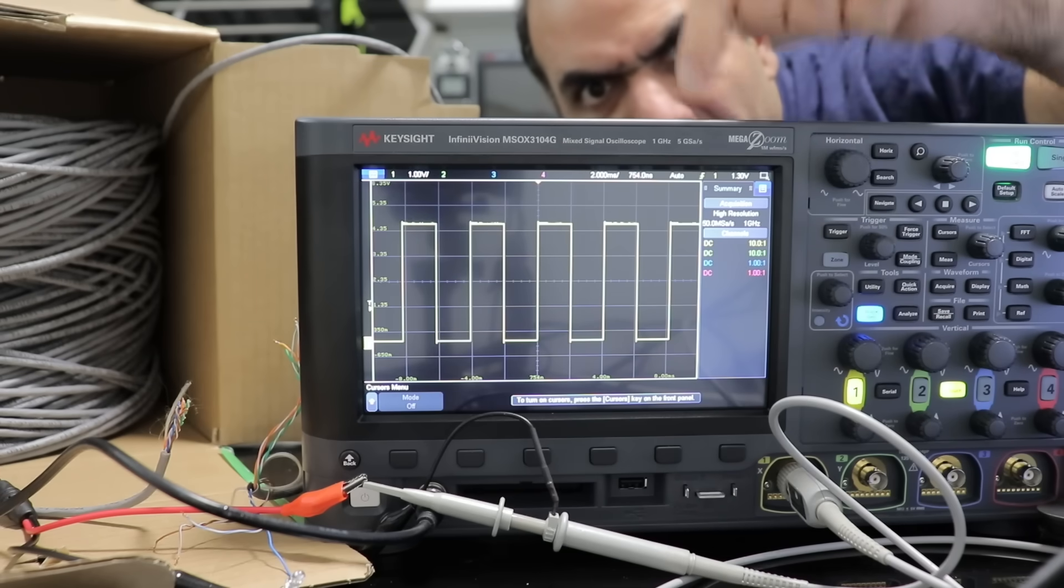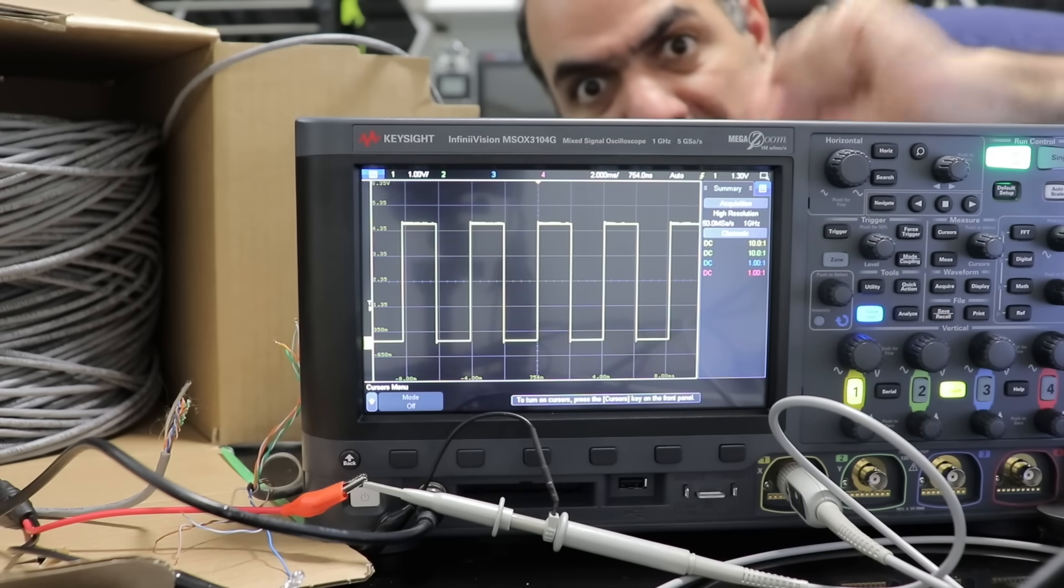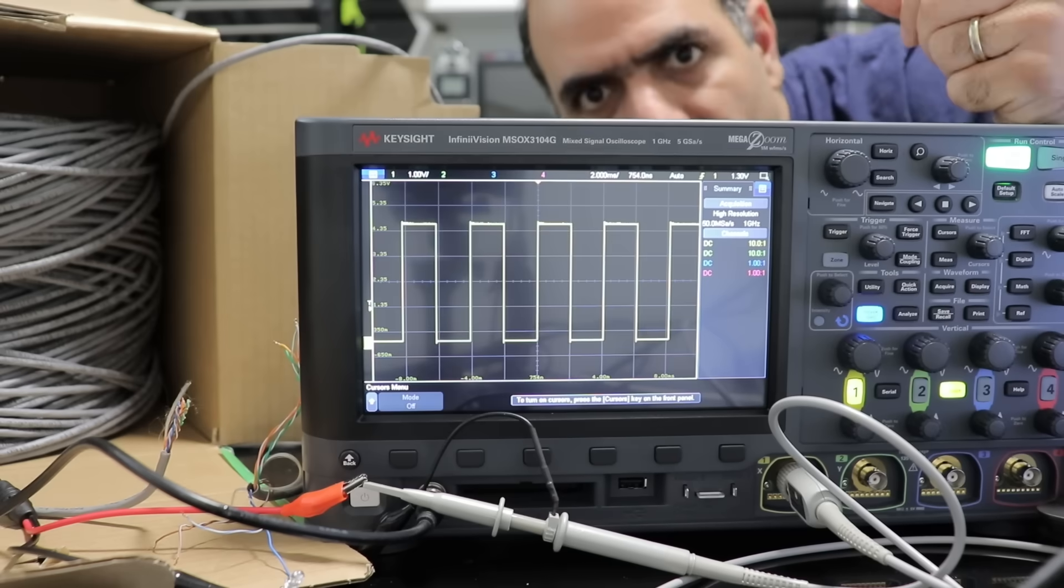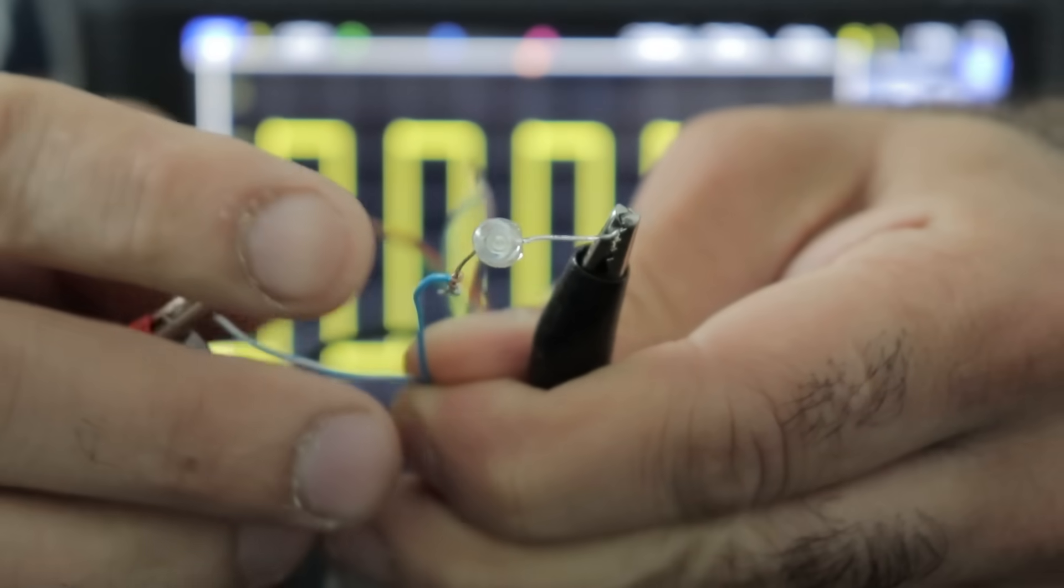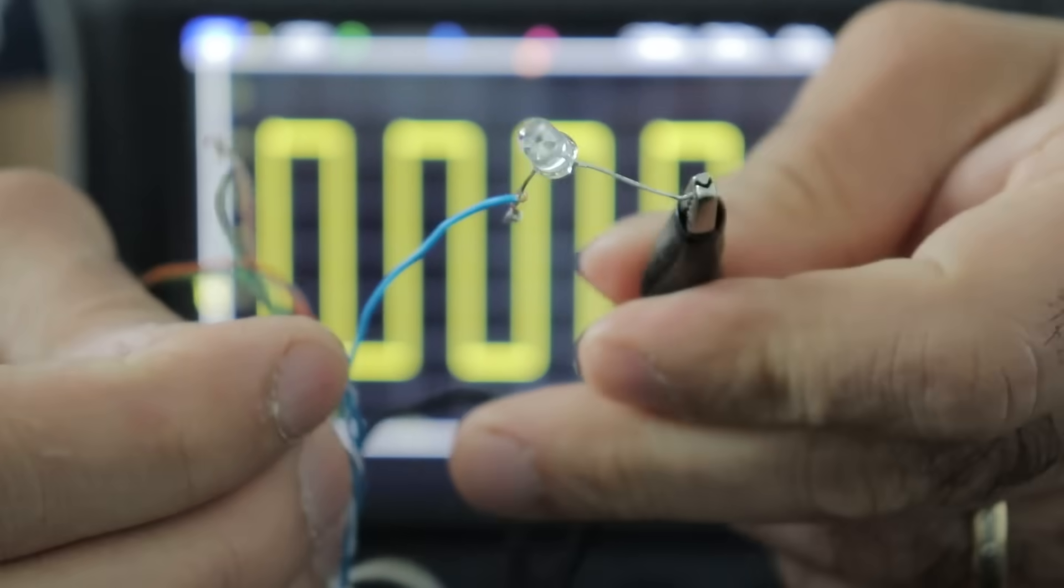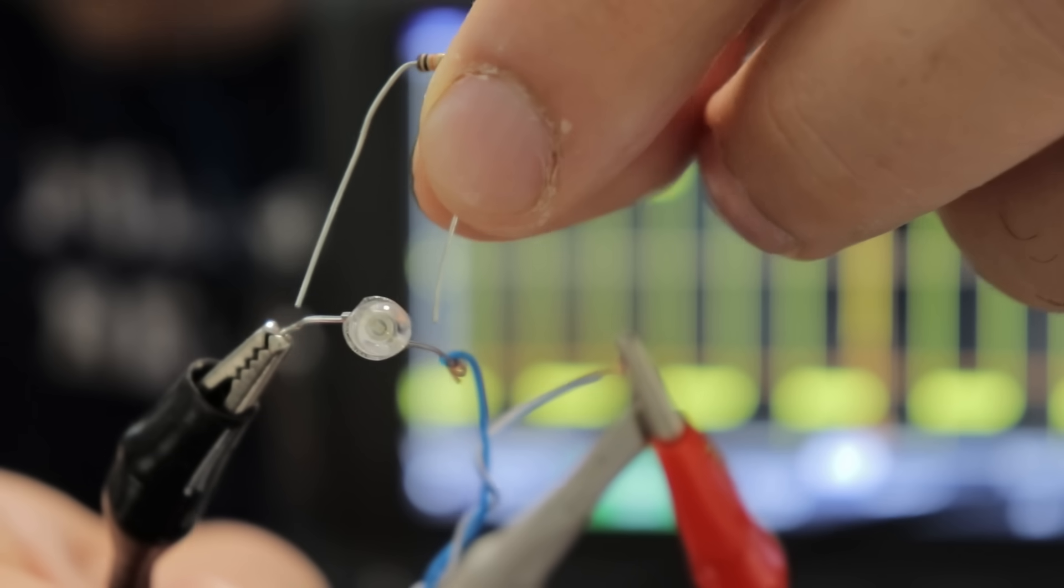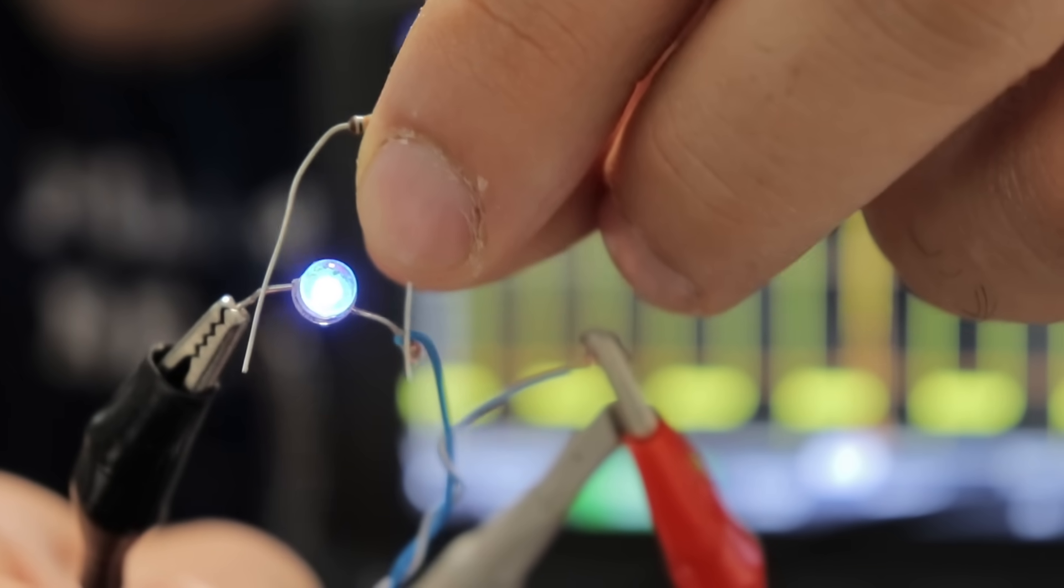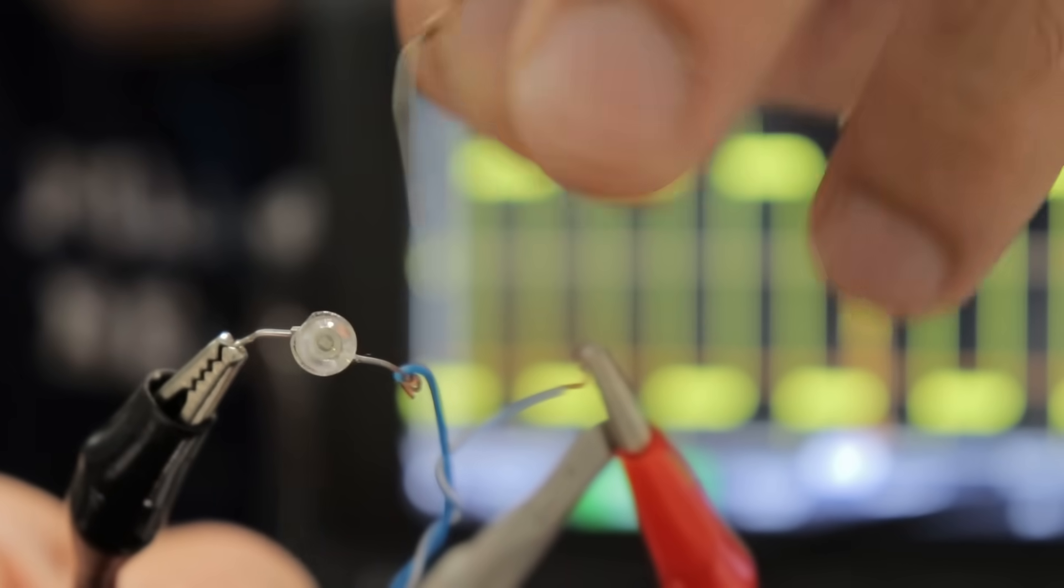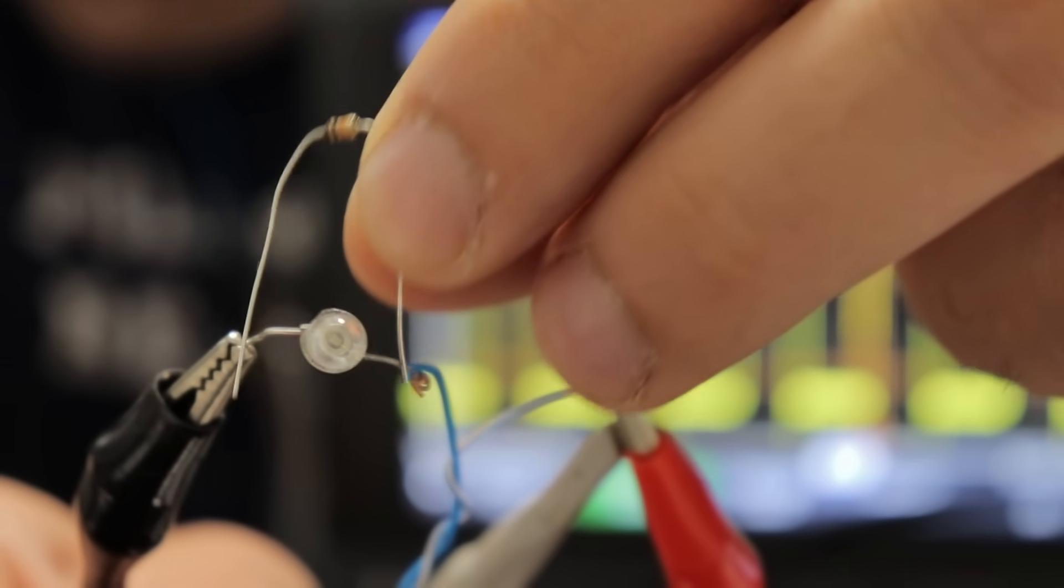Instead of a switch, I'll connect a function generator with a pulse train to constantly turn it on and off. Maybe we can see it better. Now it'll shine. Nothing? Oh, I know. Here, I have a 10 kilo ohm resistor and I'll put it across the LED. Ding! And it turns on. Isn't it funny that adding a load across the LED actually helps it?